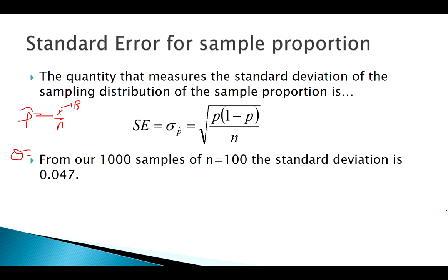So with our example, we had 1,000 samples of n equal to 100. Our standard error, 0.047. If I plug into this formula, remember we were assuming p was 0.4.